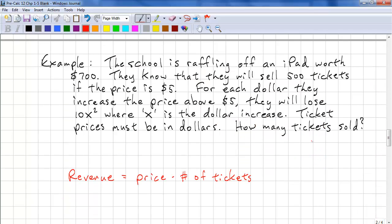Next problem. The school is raffling off an iPad worth $700. They know that it will sell 500 tickets if the price is $5. For each dollar, they increase the price above $5, they will lose 10x squared tickets, where x is the dollar increase.